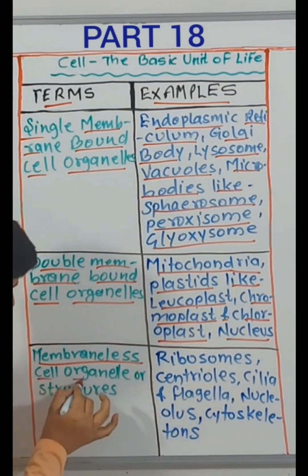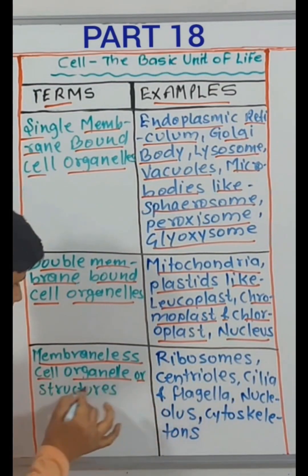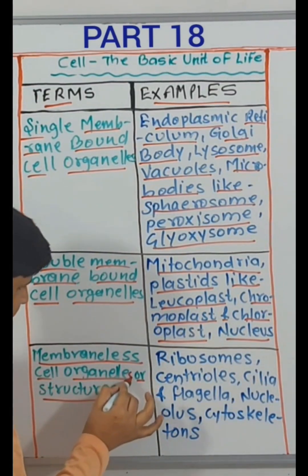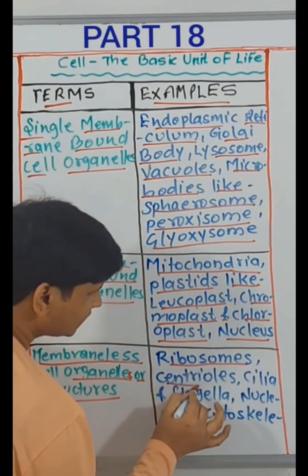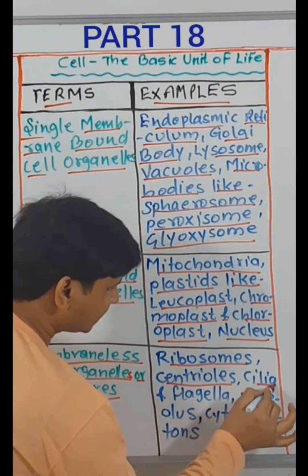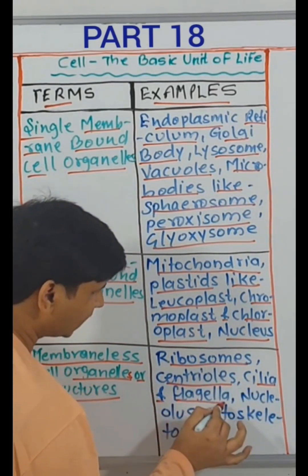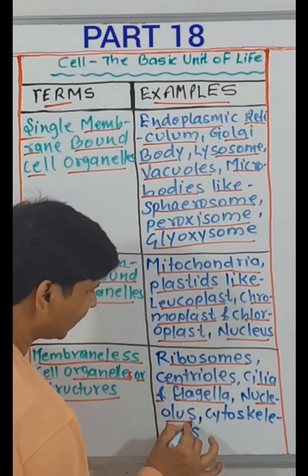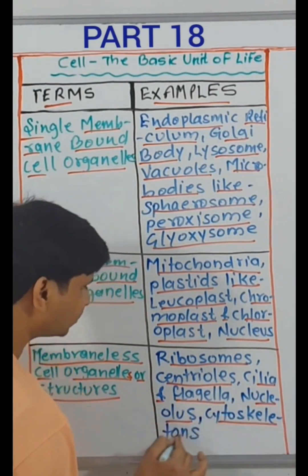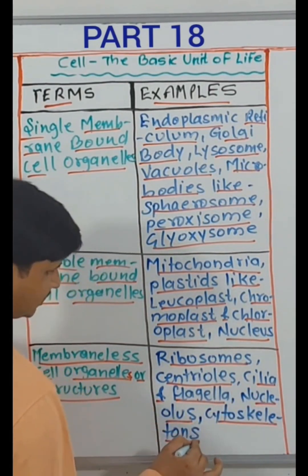Membraneless cell organelles or structures — ribosomes, centrioles, cilia and flagella, nucleolus, cytoskeleton.